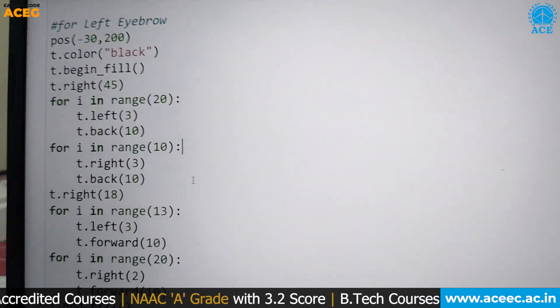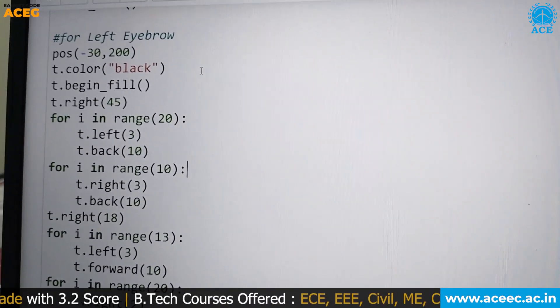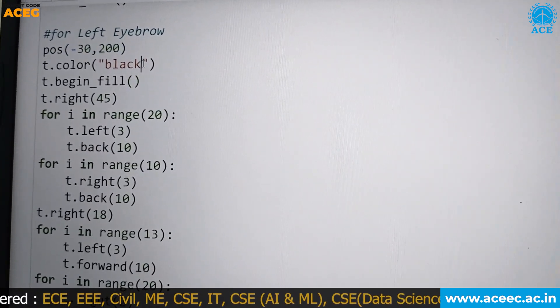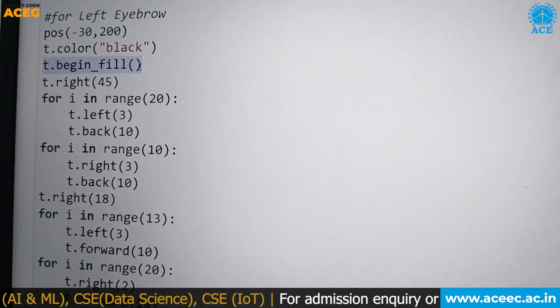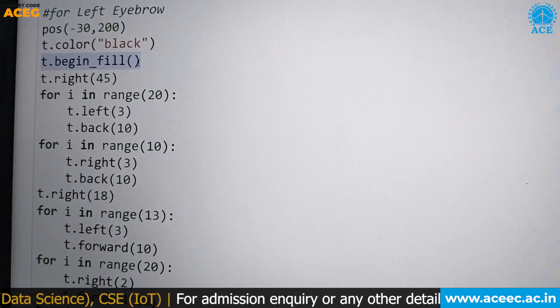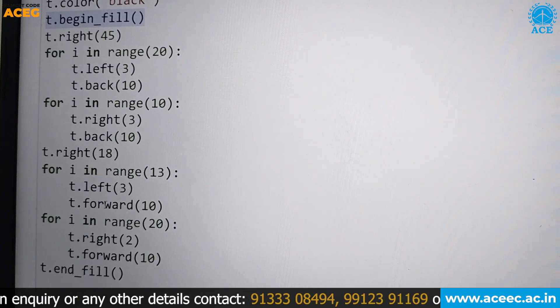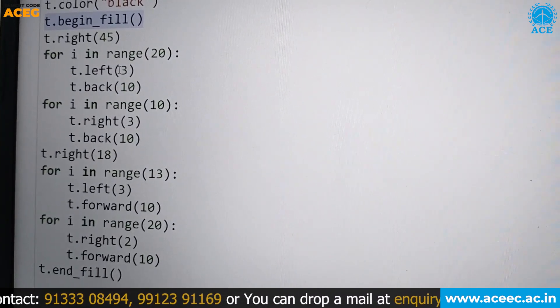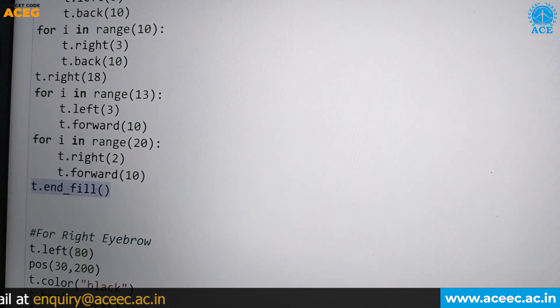Next coming to the left eyebrow, we declare the position minus 30,200, which will be slightly left towards the center of the Bindi. We declare the color is black. For that position, we use a method called begin fill, which will fill the design in the color of black. Next we use different attributes like left and back and forward for outer for loop, which will be iterated number of times. Then we use another method called end fill, which will be used after the design of the left eyebrow.